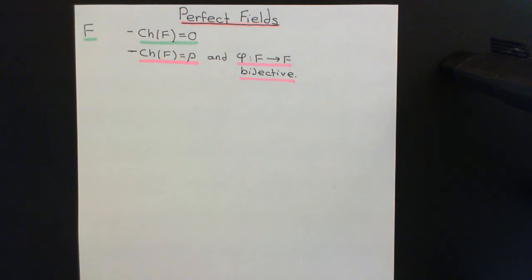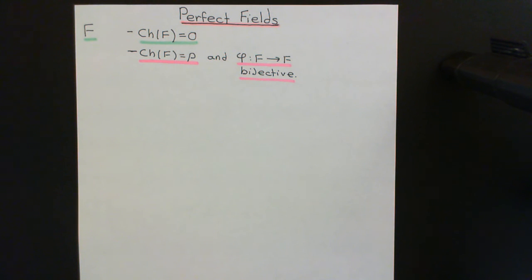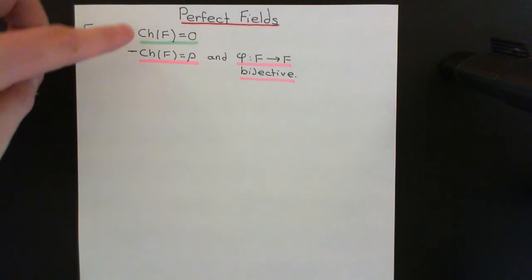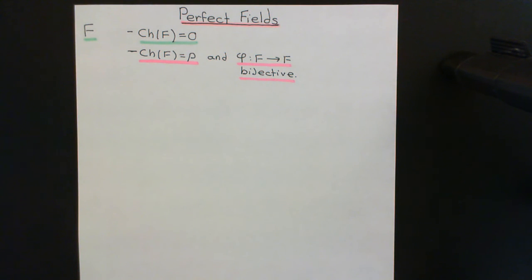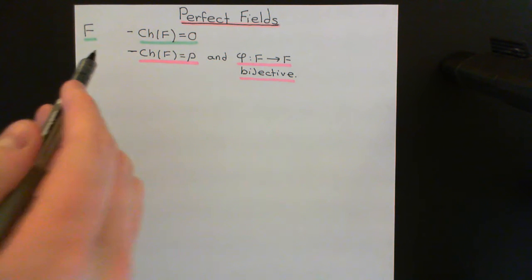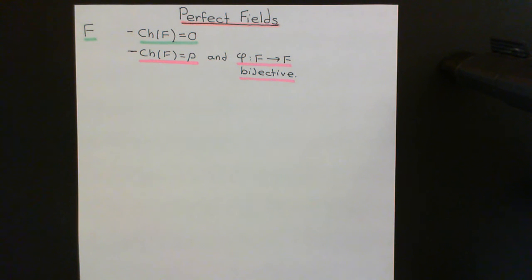Of course, you don't obey both criteria simultaneously, because a field cannot be both characteristic zero and characteristic a prime. Now, why has someone defined this? It has to do with the fact that fields that are perfect — fields obeying one of these two criteria — are going to have beautiful theorems telling us exactly which polynomials in the ring of polynomials over these perfect fields are separable and which are inseparable.